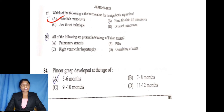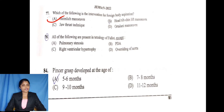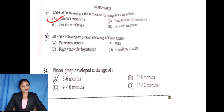Question 78: All of the following are present in Tetralogy of Fallot. Option A is pulmonary stenosis. Option B is PDA. Option C is right ventricular hypertrophy. Option D is overriding of aorta. TOF — Tetralogy of Fallot — includes pulmonary stenosis, right ventricular hypertrophy, overriding of aorta, and VSD. All of the following are present in Tetralogy of Fallot.